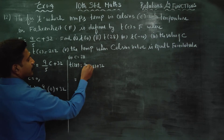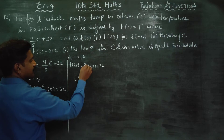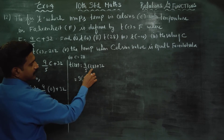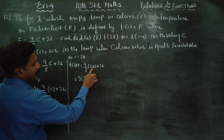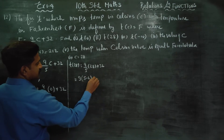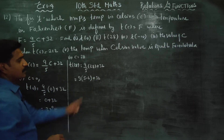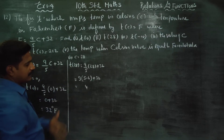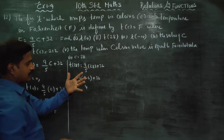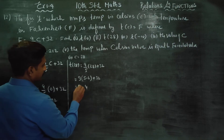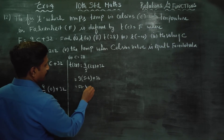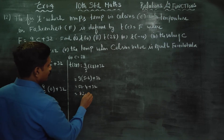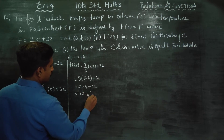Computing 9 into 28: dividing 252 by 5, we get 50.4. Then 50.4 plus 32 gives us 82.4 degree Fahrenheit.